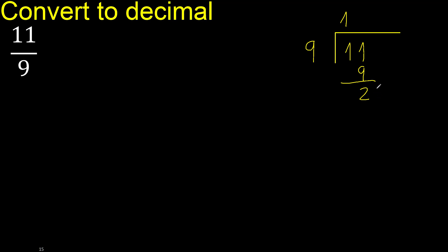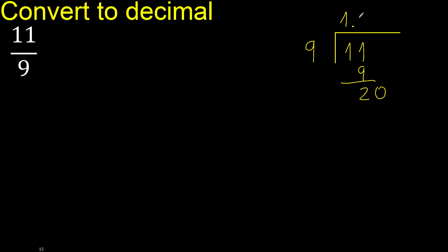There is no next number, therefore complete — always complete with 0, here with a point. 0 point, ok. 20. 9 multiplied by 3 is 27 — greater. Multiplied by 2 is 18, ok.